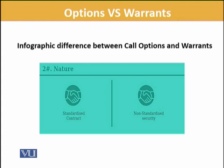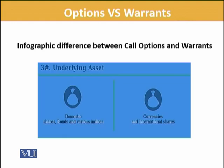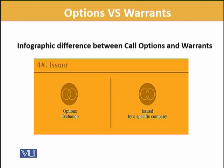Options are very standardized whereas warrants are not standardized — normally more OTC-based and issued according to specific needs. The underlying assets for options can be domestic shares, bonds, and various indices, whereas in the case of warrants it is normally currencies and international shares, though they can be on general shares and individuals as well.